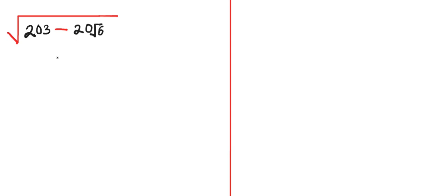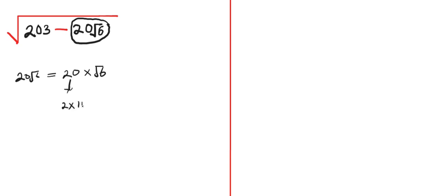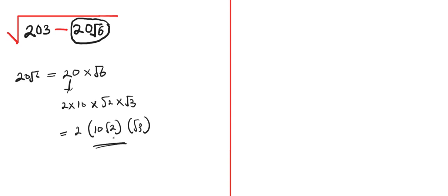In order to simplify this problem, let's concentrate on this 20 root of 6. So 20 root of 6 can be rewritten as 20 times root of 6. And 20 here is 2 times 10, while root of 6 here is root of 2 times root of 3. So if we combine this, we are going to have 2 into 10 root of 2 root of 3. This becomes the equivalent of 20 root of 6.